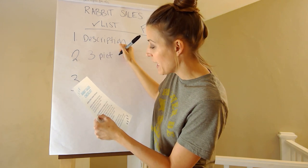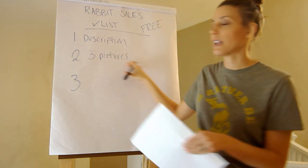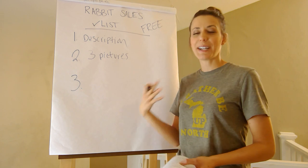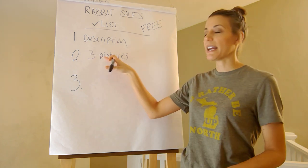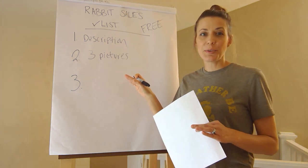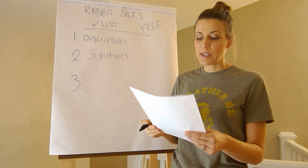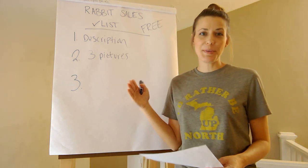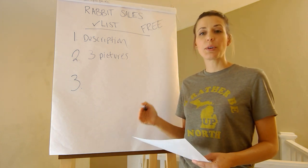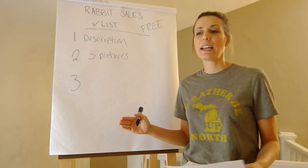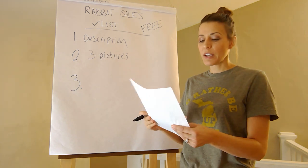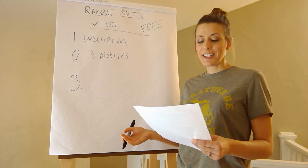Part two is pictures. You want a minimum of three pictures. If you don't have a camera or a phone with a camera, borrow one — find a way to get at least three pictures, because pictures really matter to the listing of your rabbit. Your pictures need to be clear; if there's any blurriness, don't post that picture — just delete it.